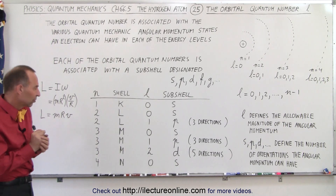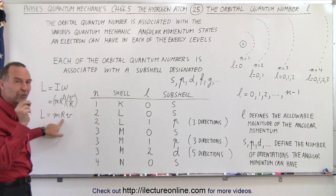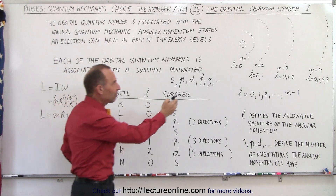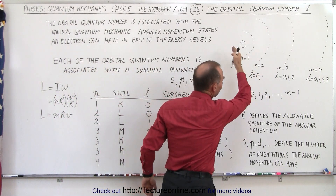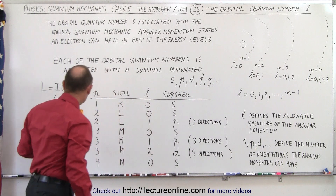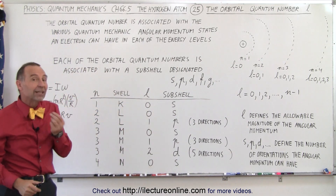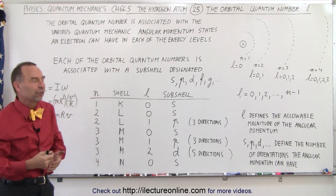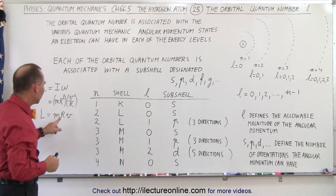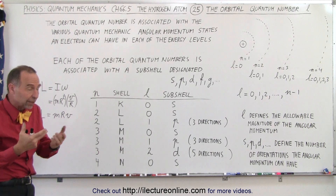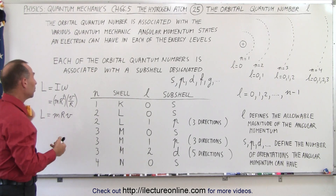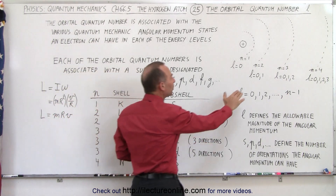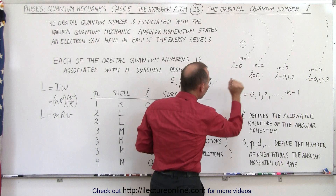But in quantum mechanics, that's not the case. The radius is very well defined in a hydrogen atom — the electron can only exist at very specific orbits that have very specific radii. The associated velocity of the electron is then also quantized, with very specific velocities for very specific orbits. So if the radius and the velocity are quantized, then the angular momentum must be quantized as well, and that quantization is defined by the orbital quantum number l.